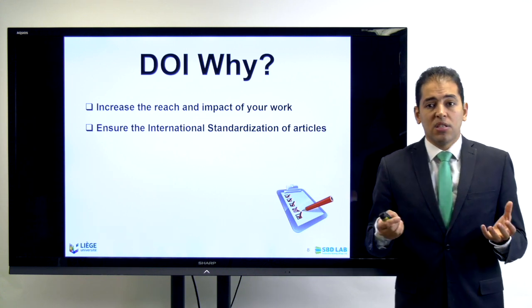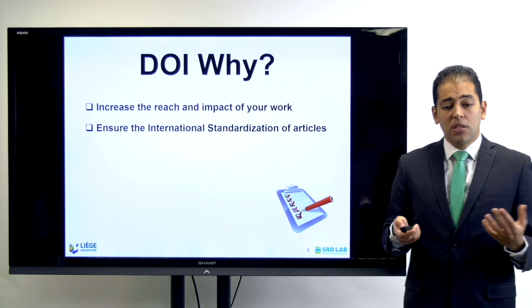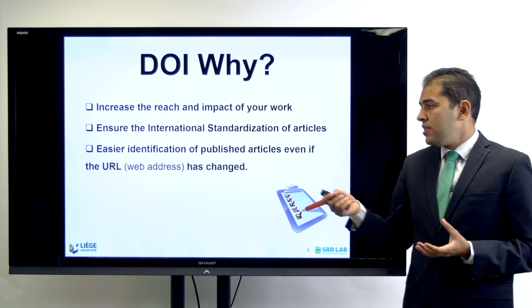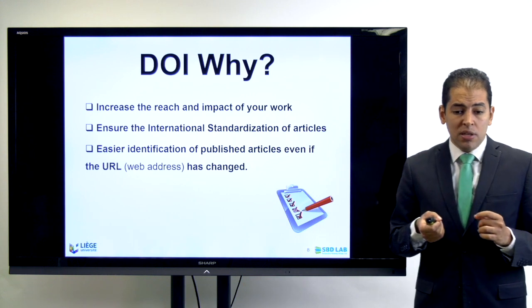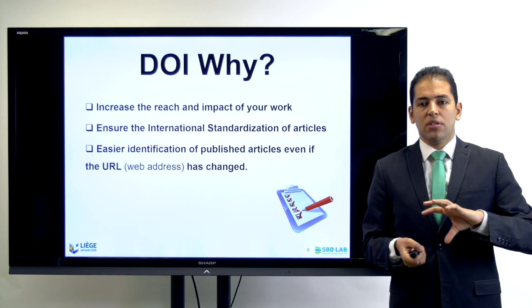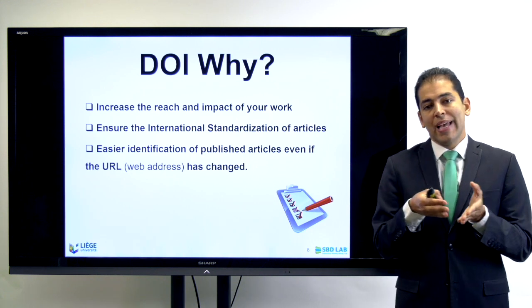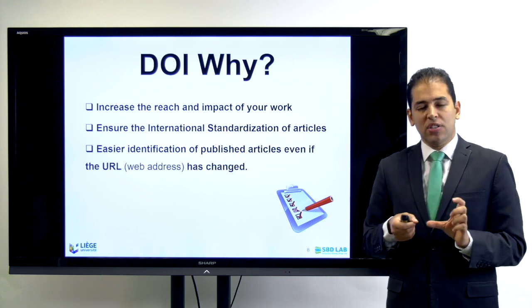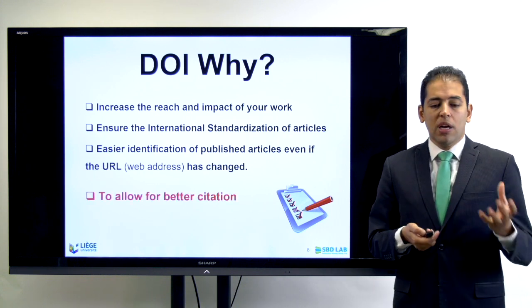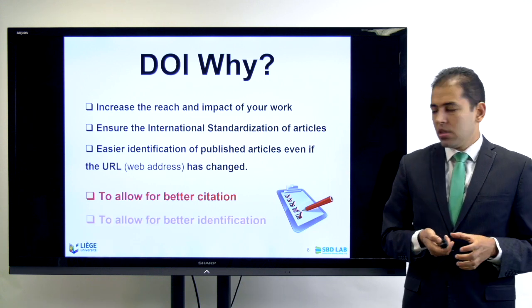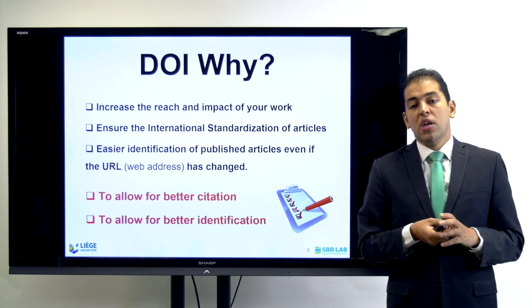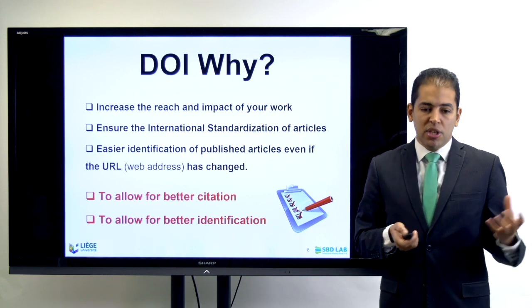A DOI also ensures the international standardization of the article, making it accessible to everybody in the world. It allows easier identification of published articles even if the URL address has changed — this is a key advantage of a DOI. Even if the link to your document has changed, a DOI will not change, and people can still trace your work. If you are a scientist, it will allow you to have better citation for your manuscript or document, and better identification in general. This is very important for scientists and professionals working in the publishing industry.